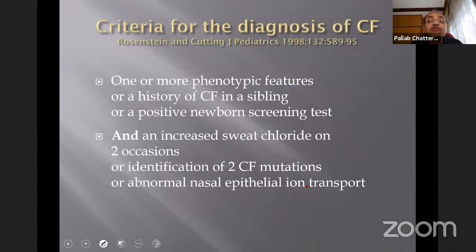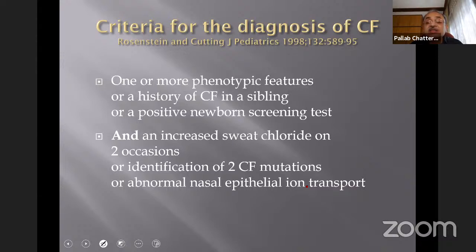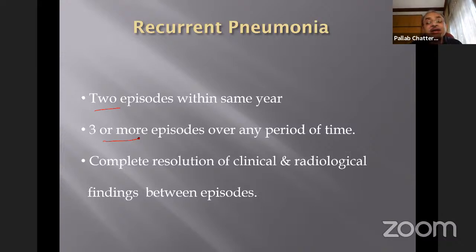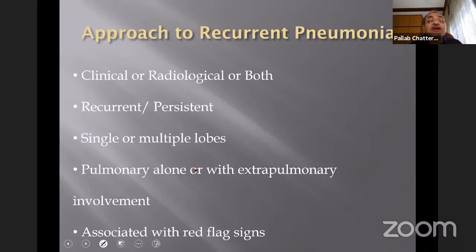This brings us to recurrent pneumonia. Recurrent pneumonia is defined as two episodes in the same year, or three or more episodes over any period of time, with complete resolution of clinical and radiological findings in between episodes. We need to differentiate recurrent from persistent, identify whether a single or multiple lobes are involved, whether it is pulmonary alone or with extrapulmonary involvement, and look out for red flag signs.